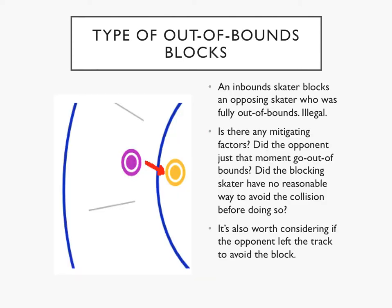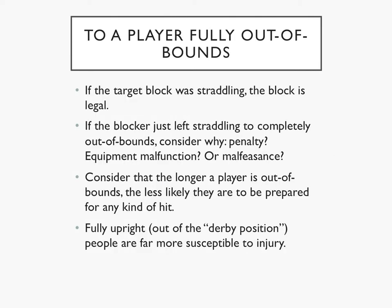Let's start with the actual out-of-bounds blocks — first, with a skater inbounds who blocks a skater fully out-of-bounds. Generally speaking, that's bad and penalizable. You might find some leeway if the out-of-bounds skater just went out-of-bounds and there was no way for the opponent to avoid hitting them, but for general discussion purposes, not blocking a skater already out-of-bounds should be pretty easy. If the target skater was straddling, the block is legal. But if that skater just went out-of-bounds, I'm likely to give the initiating blocker some slack. The longer that target skater is out-of-bounds, however, the less leeway I'm going to give.